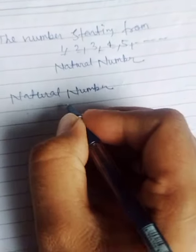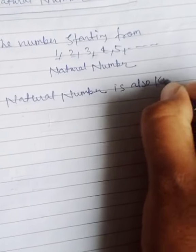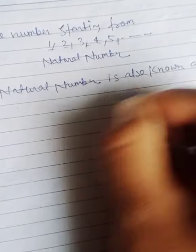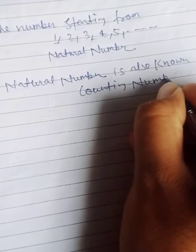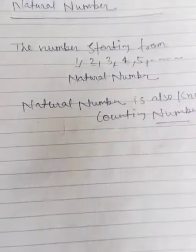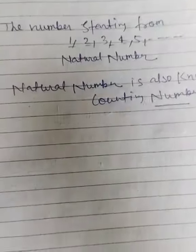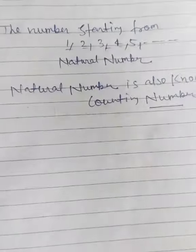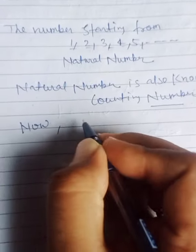We can also say the second name — natural numbers are also known as counting numbers. Does everyone understand what is a natural number? The numbers starting with one, two, three, four and so on to infinity — that is a natural number. Now let's come to the next point.